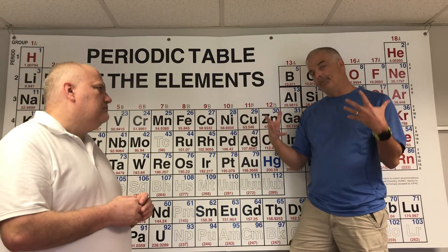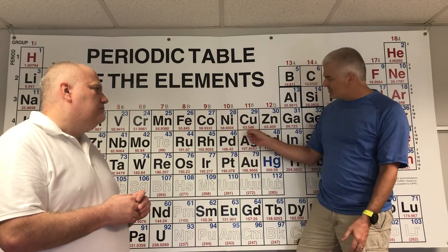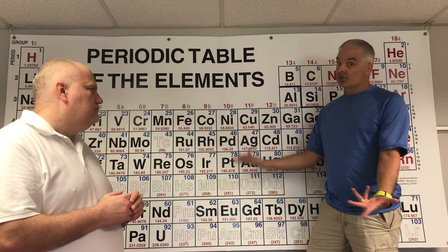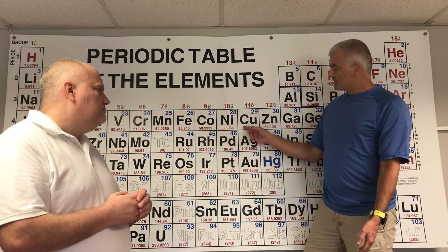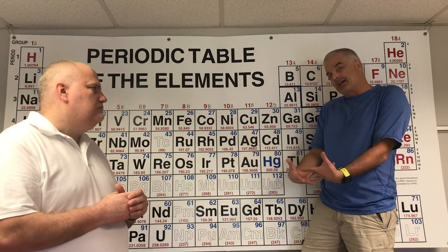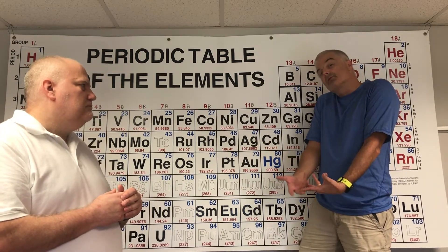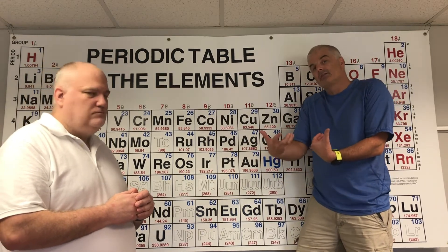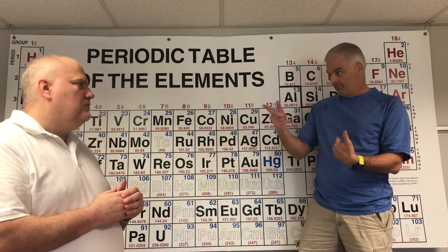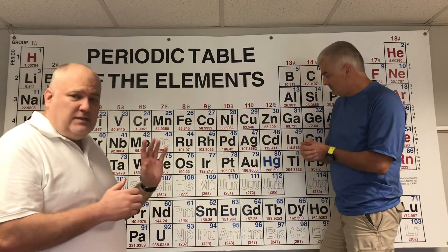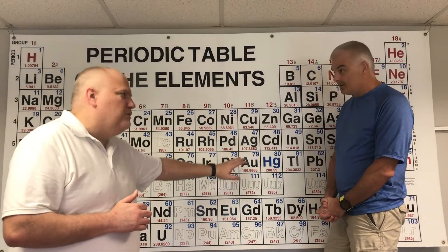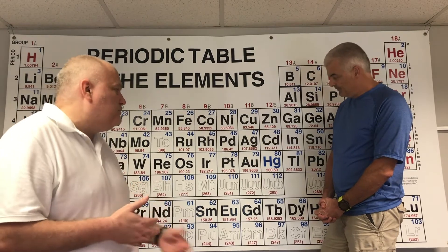Lastly, there's a number on the bottom we're going to call the atomic mass. You might notice something like 63.5 — we usually round to the nearest whole number with a couple of exceptions. This is the weight of the atom, and that weight is found in the nucleus. It represents the protons and the neutrons, where a proton weighs one and a neutron weighs one.